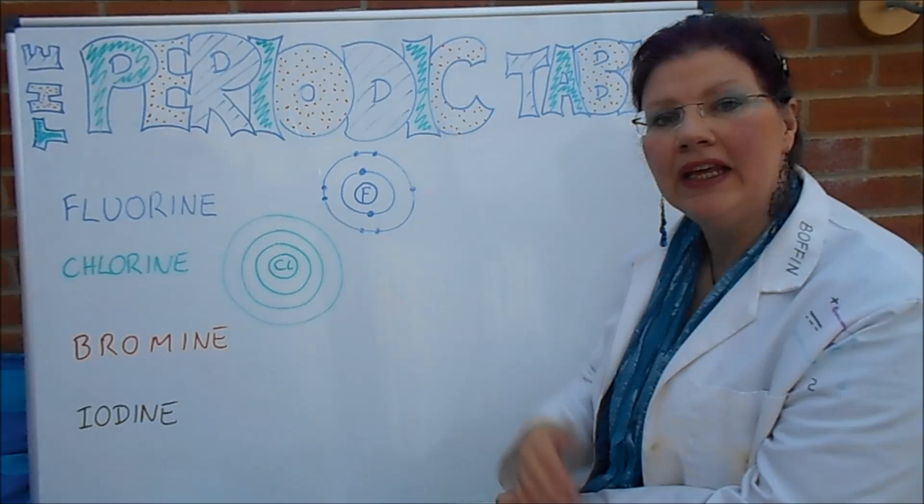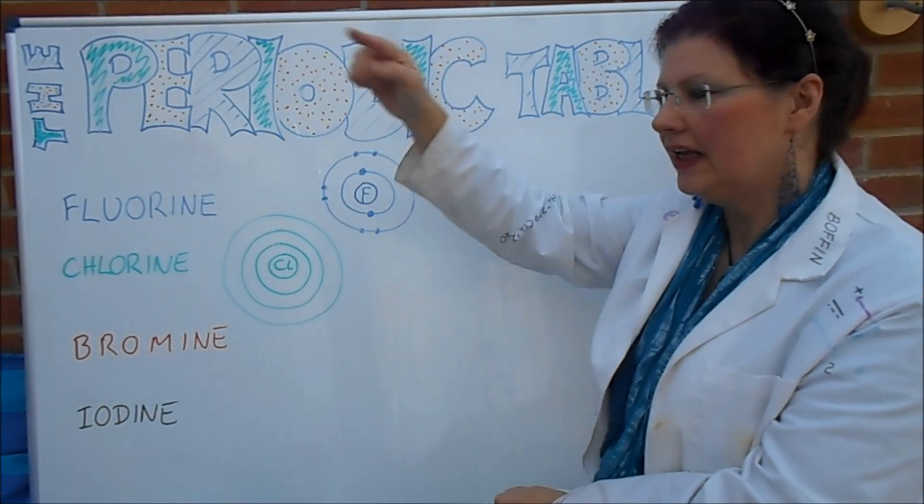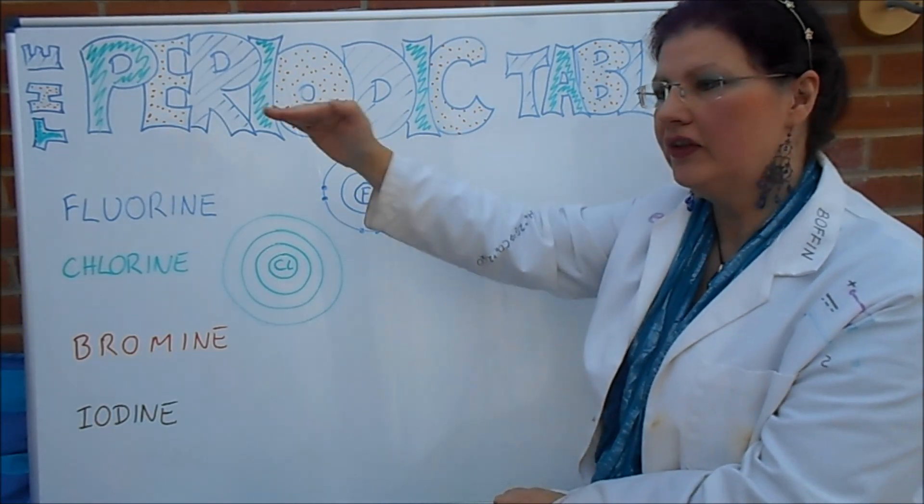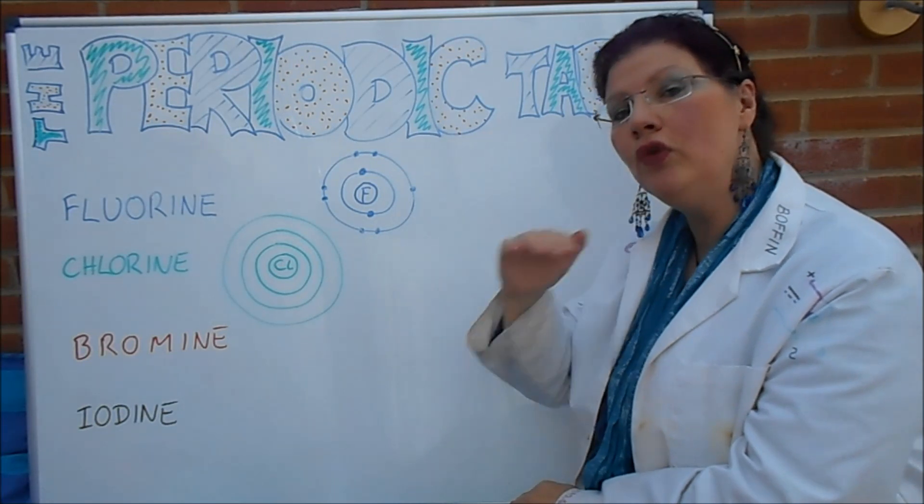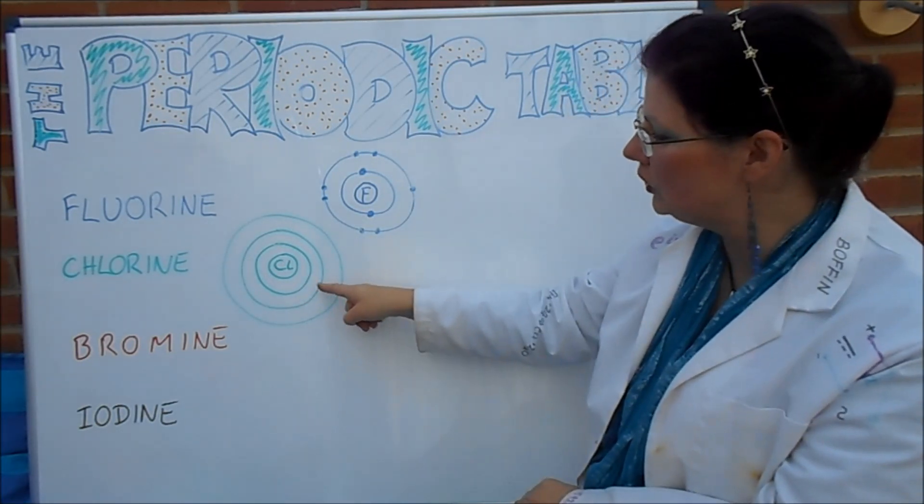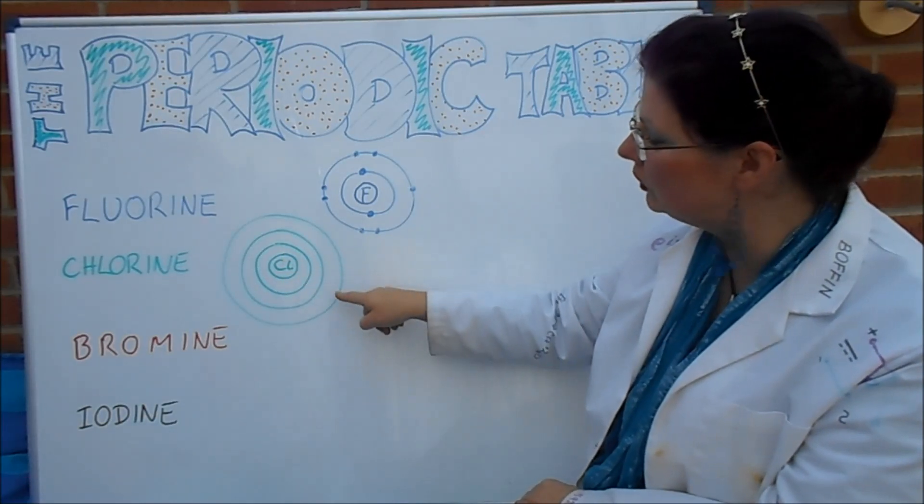Now Chlorine is in the next layer down in the periodic table, the next period we call it. So the top layer is for the inner ring. The second layer down, which is where Fluorine is, has two rings. Chlorine is on the third layer down, so that has three rings. Here they are, one, two, three. There's Chlorine in the middle. That inner circle indicates the nucleus, and one, two, three rings.